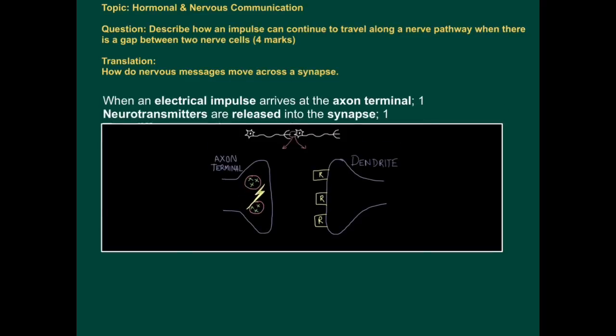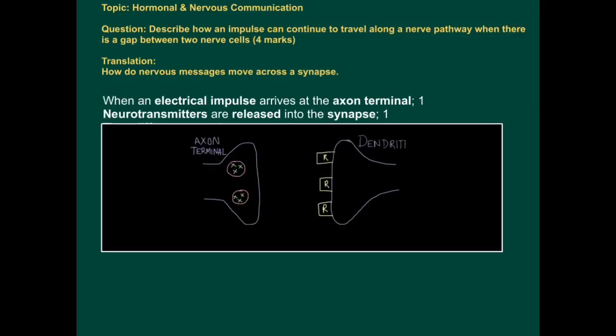Then chemicals called neurotransmitters, or you can call them NT substances, are released into the synapse and you can see that happening here.